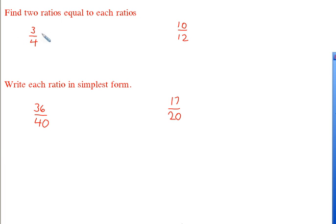So here, if you find two ratios, find two ratios equal to each ratio. And if you look at 3 fourths, if I want to change this, all I have to do is do what I would do to a fraction, just multiply the top and the bottom by the same thing. If I multiply by 2, I have 6 over 8. Or if I multiply by 10, I'd have 30 over 40.